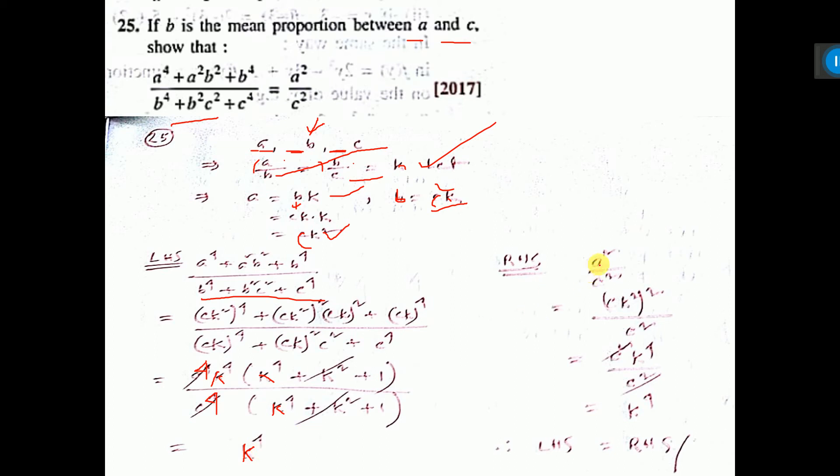Now, to right hand side, A square by C square. So, A means CK square, so it is C square, K to the power 4, and down CK square. So, C square, C square cancel. Now, only K to the power 4 left.